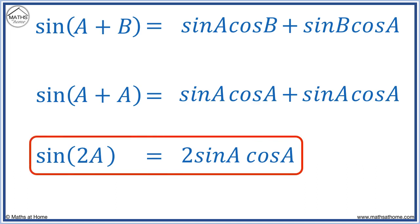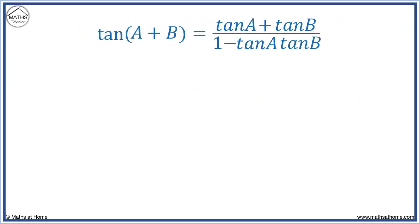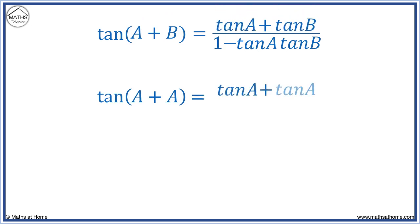Here is the compound angle formula for tan. Again we replace all b's with an a. We get tan(a + a) equals tan(a) plus tan(a), over 1 minus tan(a)·tan(a).